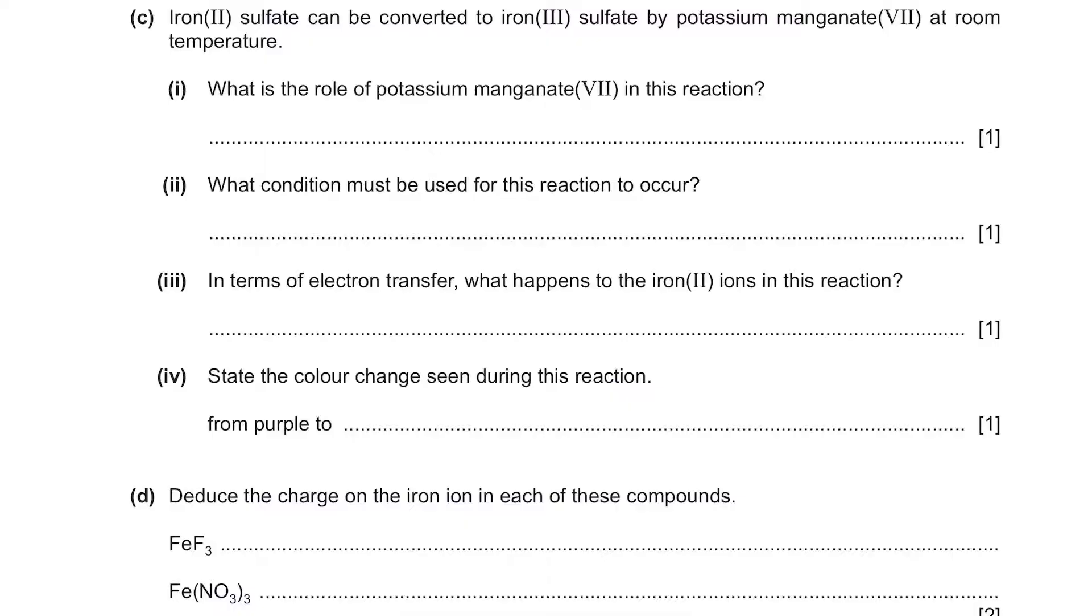Part C, Fe2+ sulfate can be converted to Fe3+ sulfate by potassium manganate 7 at room temperature. What is the role of potassium manganate 7 in this reaction? Now potassium manganate 7 is often used as an oxidizing agent. So that's why Fe2+ sulfate became Fe3+ sulfate. It has been oxidized. Then what condition must be used for this reaction to occur? Well, to use an oxidizing agent called potassium manganate 7, it needs to be an acidic condition. Or we can write the presence of an acid.